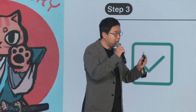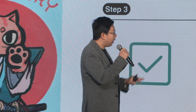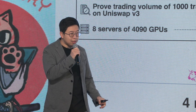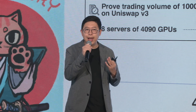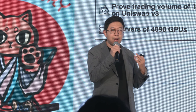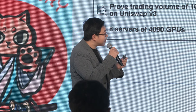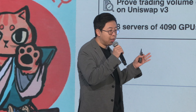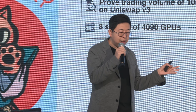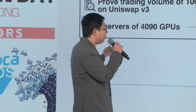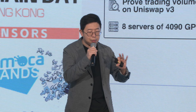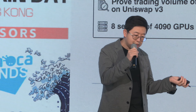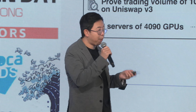There is no trust given to Brevis or any other intermediary systems. And you always hear that ZK is expensive and creates very high overhead. Well, Brevis is actually very much production ready — to prove the trading volume of 1,000 trades on Uniswap using eight commodity-scale GPU servers, it costs about $1.80 and the latency is only about two minutes.